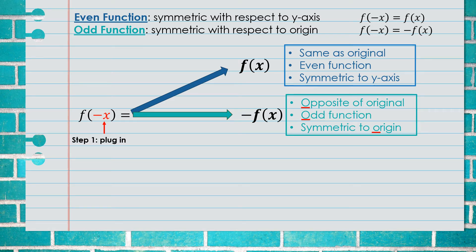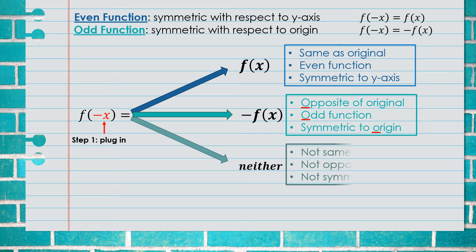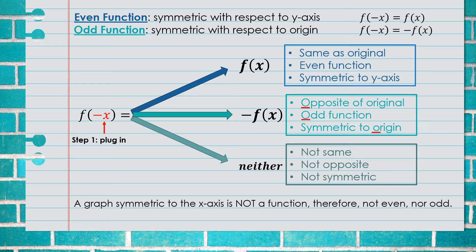There is still another option. If you plug in negative x and the result is not the same as the original and not the opposite, that means it is neither. Neither means it is still a function, but it is not symmetric to the y-axis and not symmetric to the origin — it is just a regular function. A graph symmetric to the x-axis is not a function because it does not pass the vertical line test, so it cannot be even or odd.